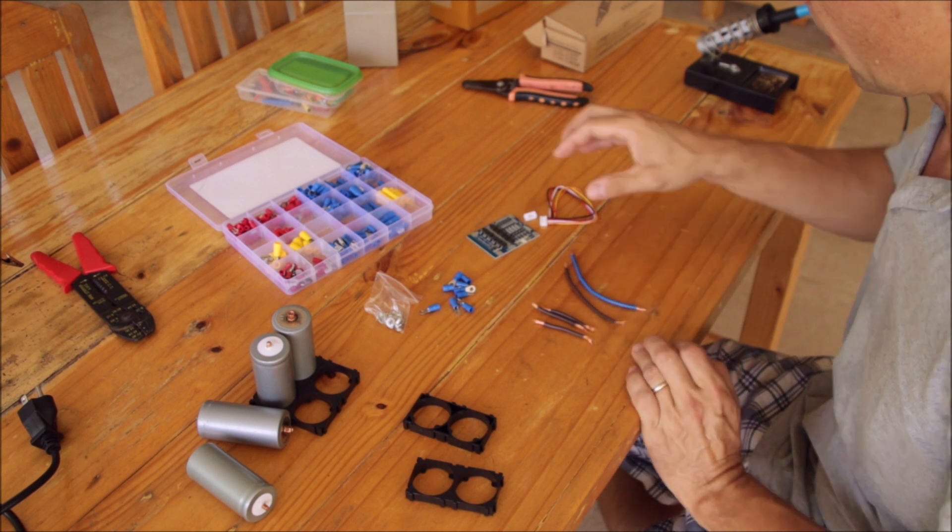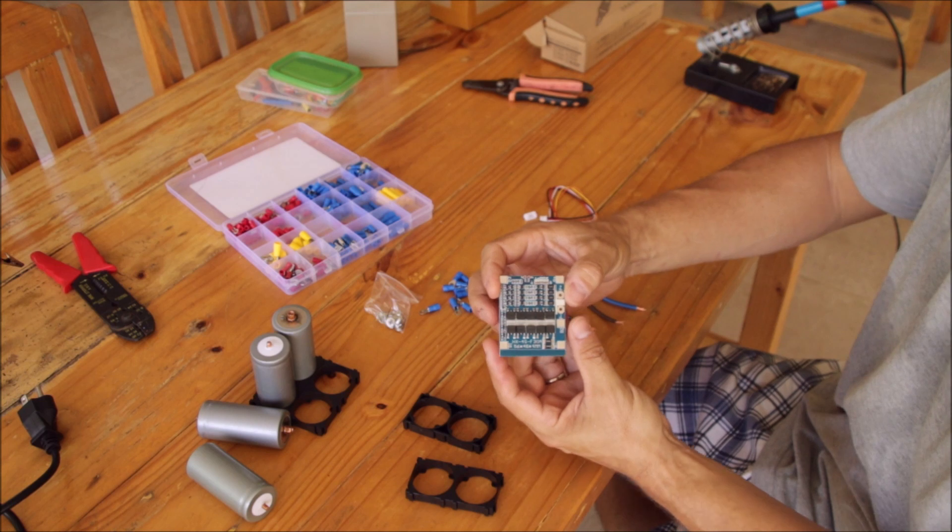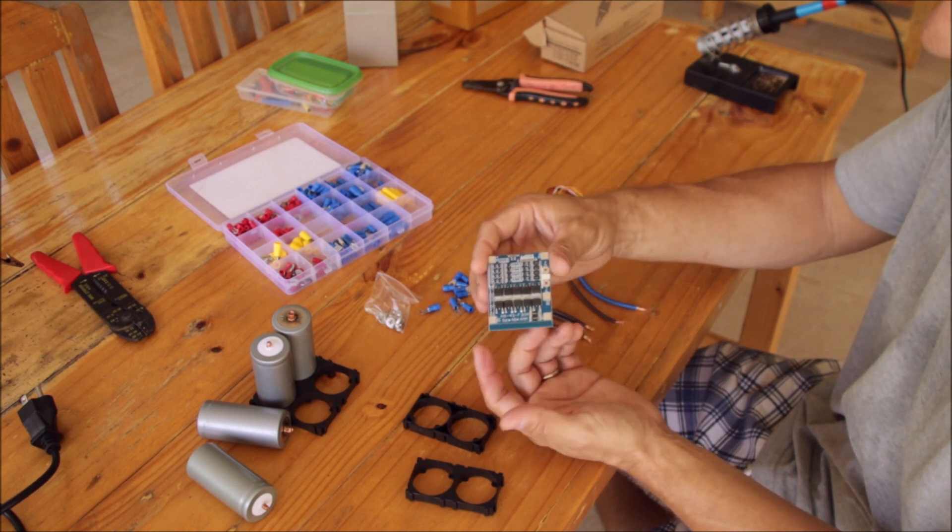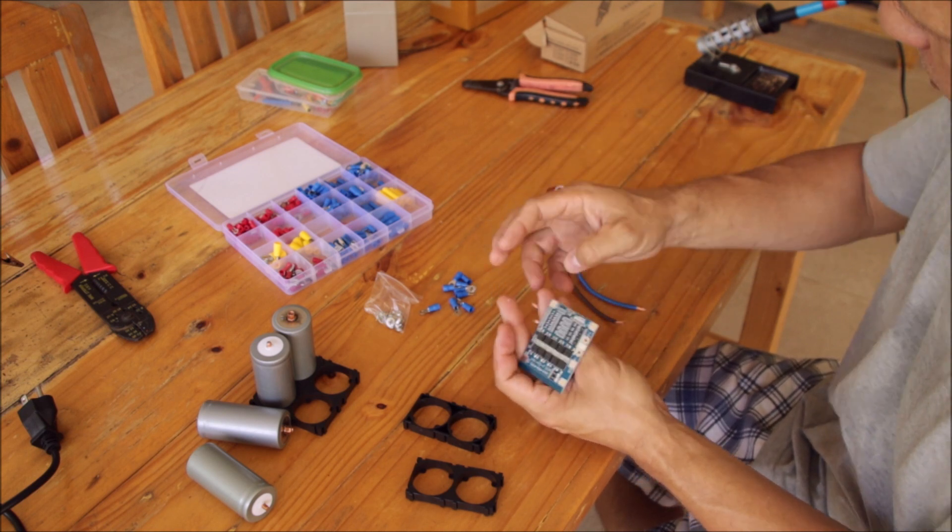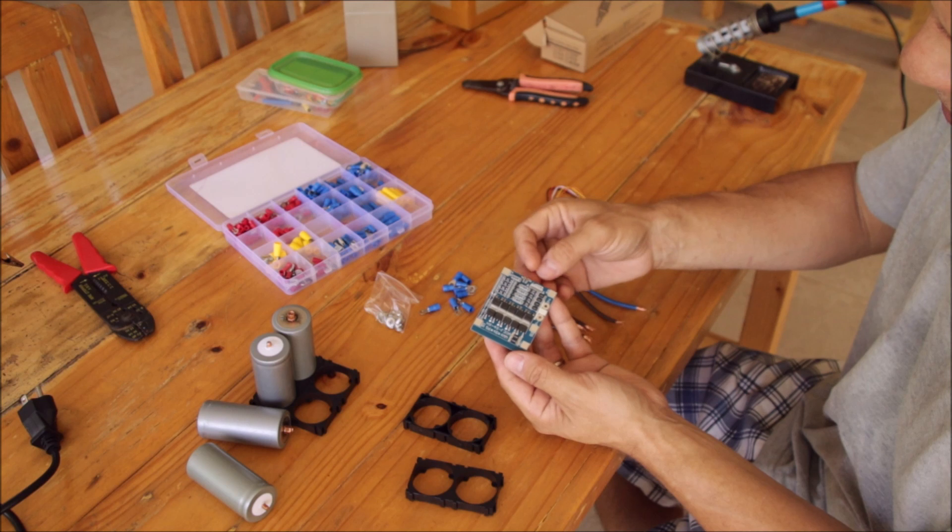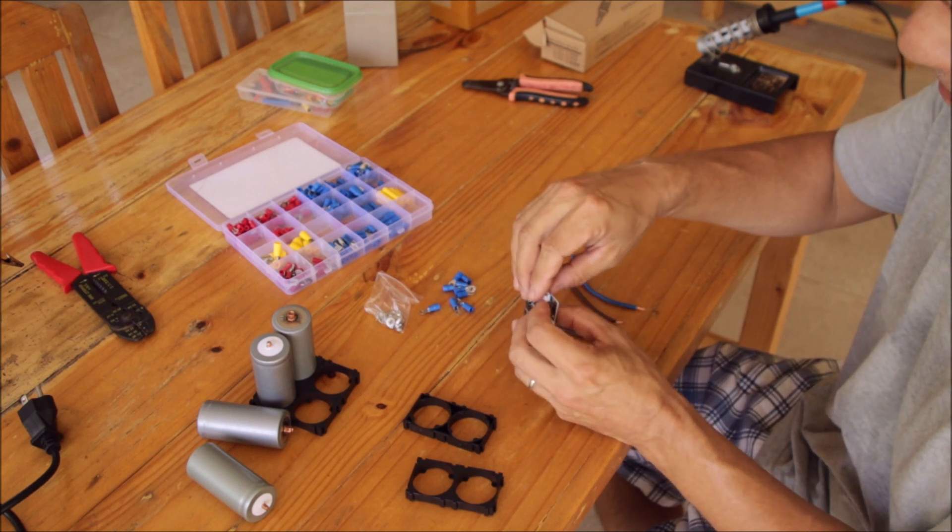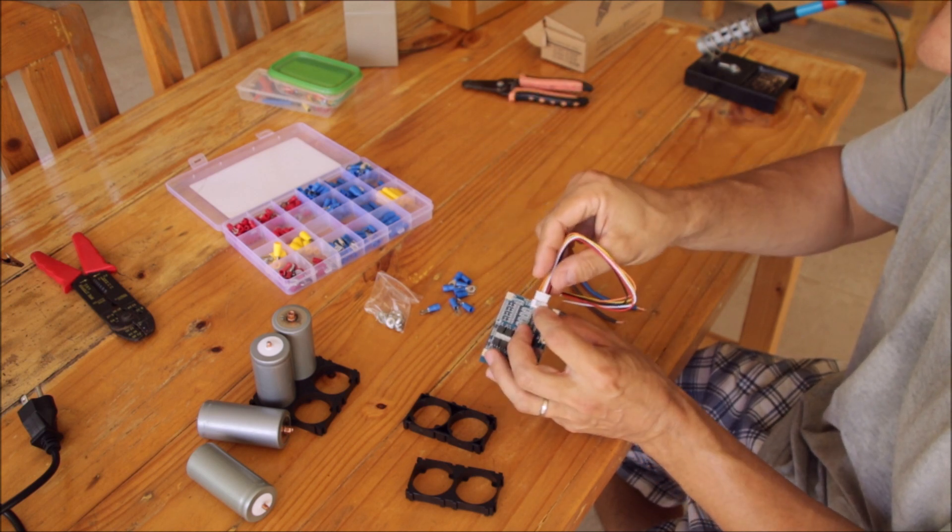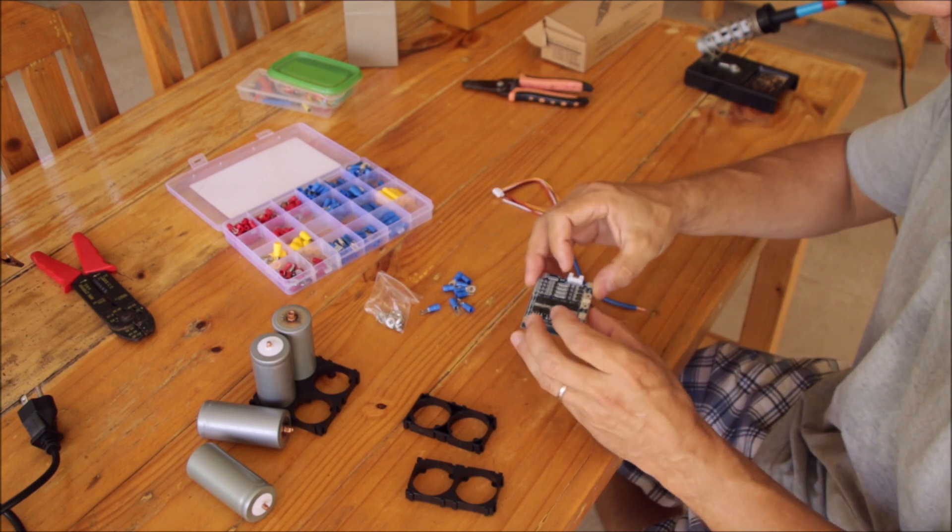What do we need to do first? The BMS, it came like this, just in parts. So this is a 30 amp 4S BMS, very simple for lithium ion phosphate. It has a little bit of balancing capacity, but it came like this. So the first thing we need to do, we need to solder this connector for the balancing where we then later on can connect our balance cables here. So let's do that.